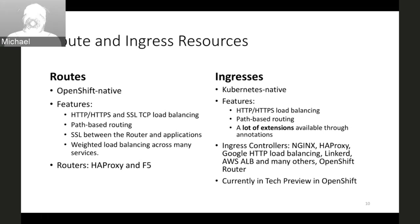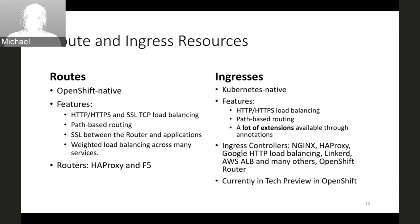The Ingress resource offers a slightly more limited number of features compared to OpenShift routes. However, users have many options for which load balancer they can use with Ingress. For OpenShift router there are only two load balancers — HAProxy, which comes with OpenShift by default, or an F5 load balancer. With Ingress, there are several Ingress controller implementations for different load balancers, including NGINX and many other popular load balancing solutions. It is worth noting that Ingress resource in OpenShift is currently in Tech Preview.